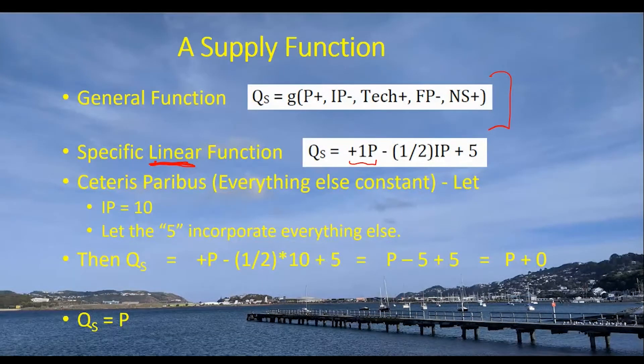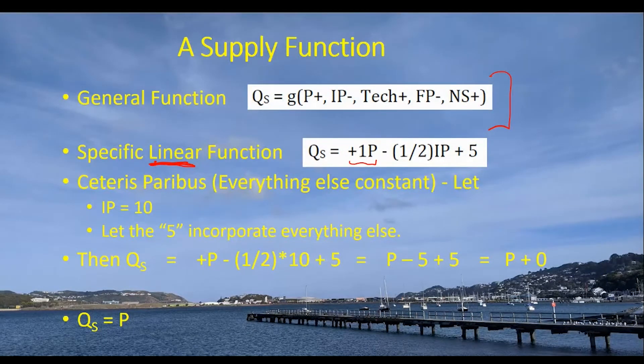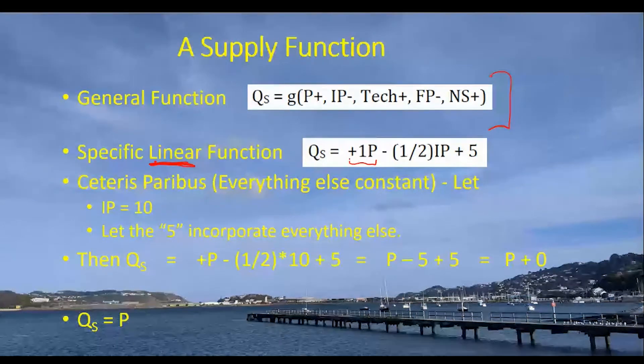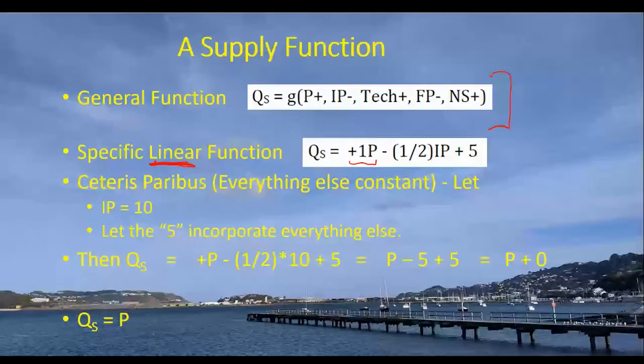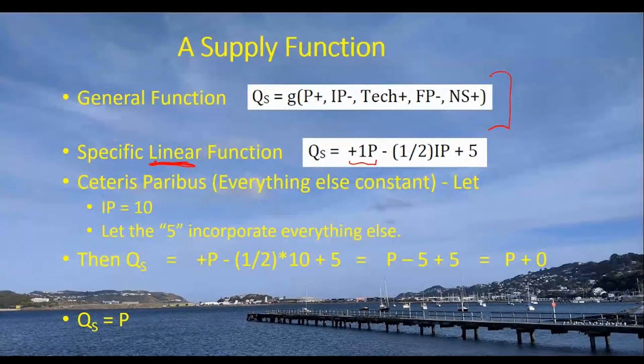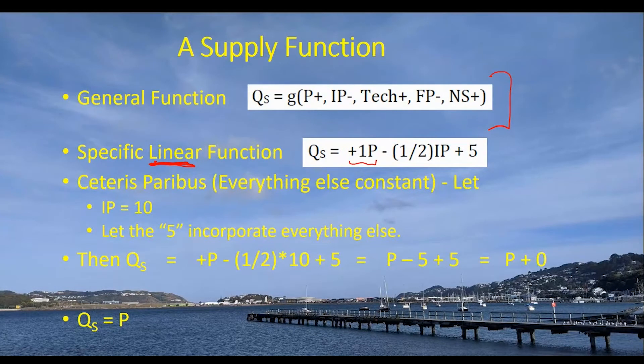So we've got the price of the product itself, 1 times P is going to affect the quantity supplied. And again, the numbers are kind of immaterial. The numbers are going to be kind of silly, small numbers, but that's okay. We're just trying to work with the relationship here.